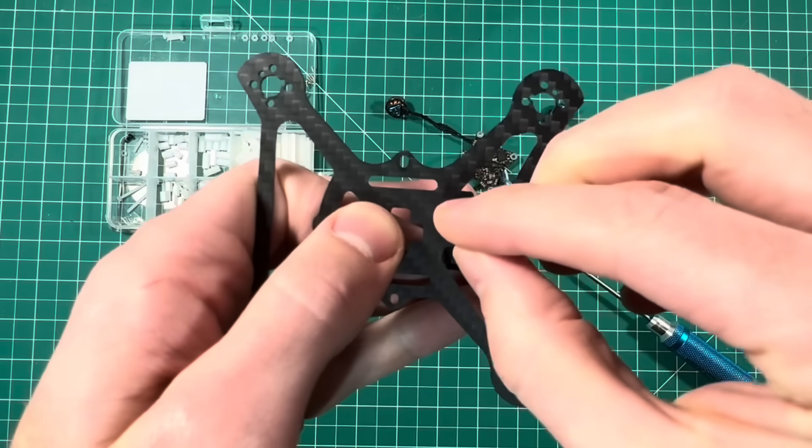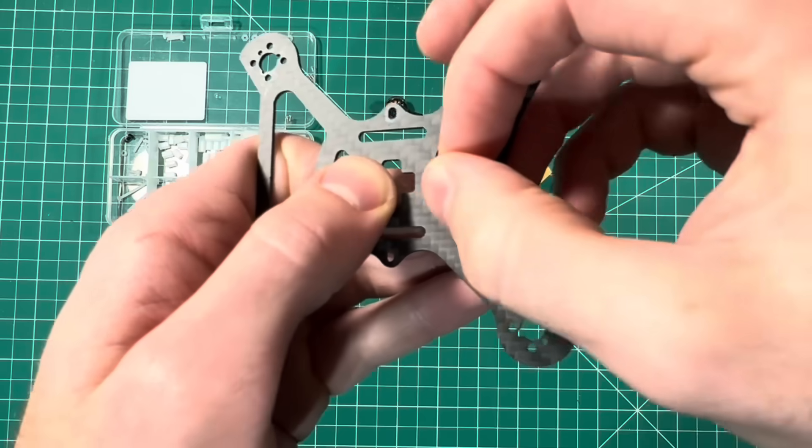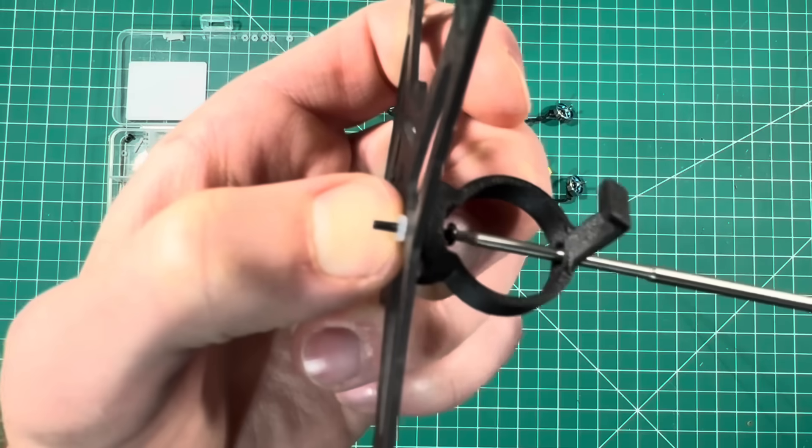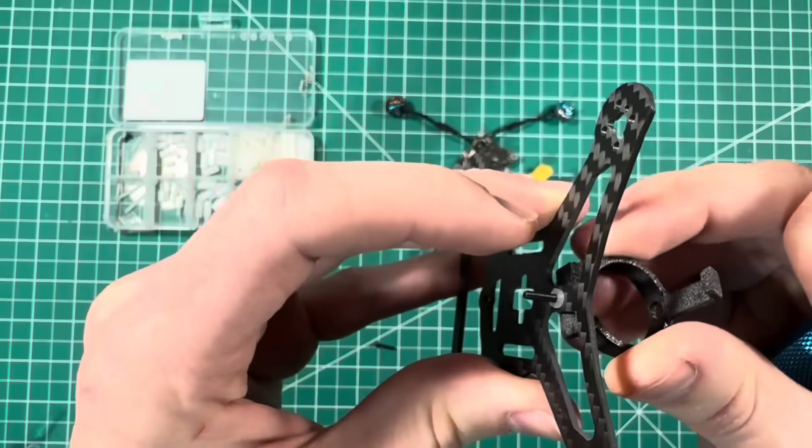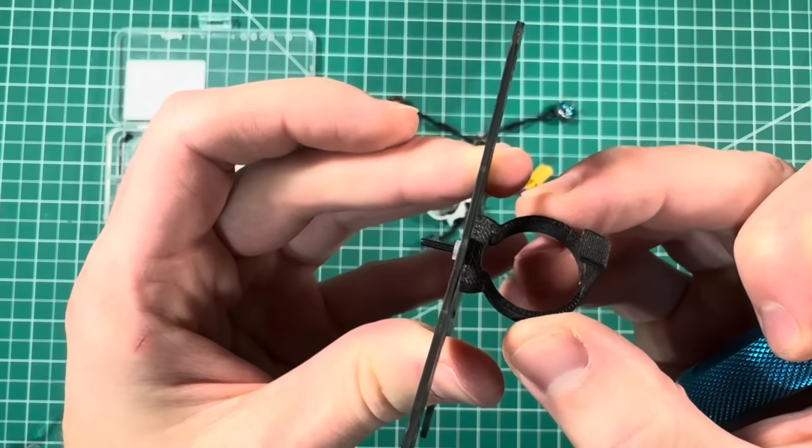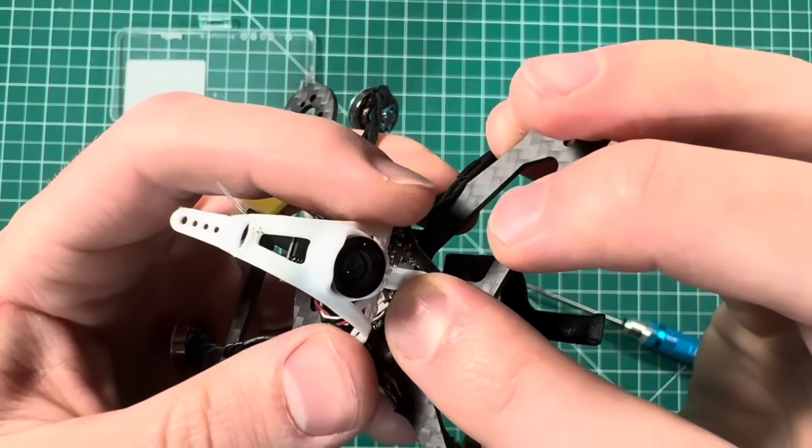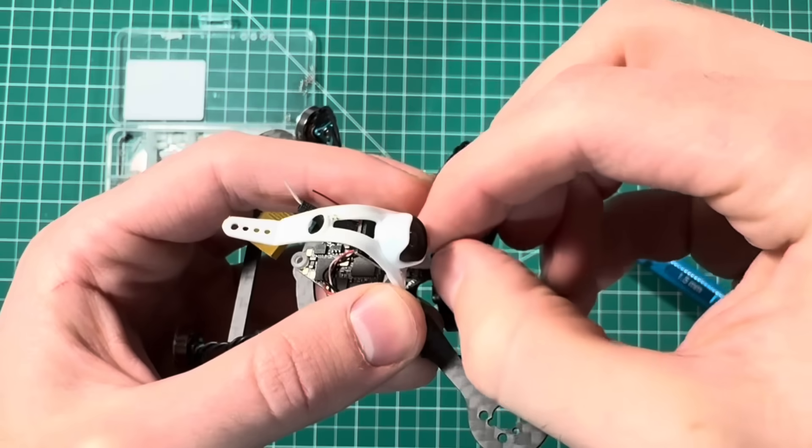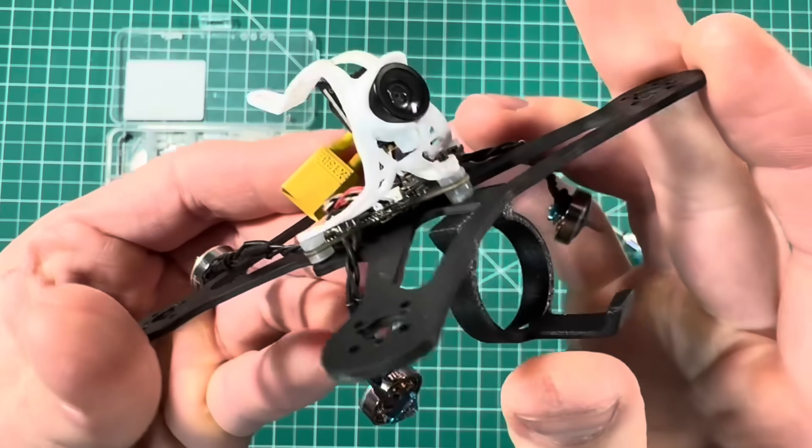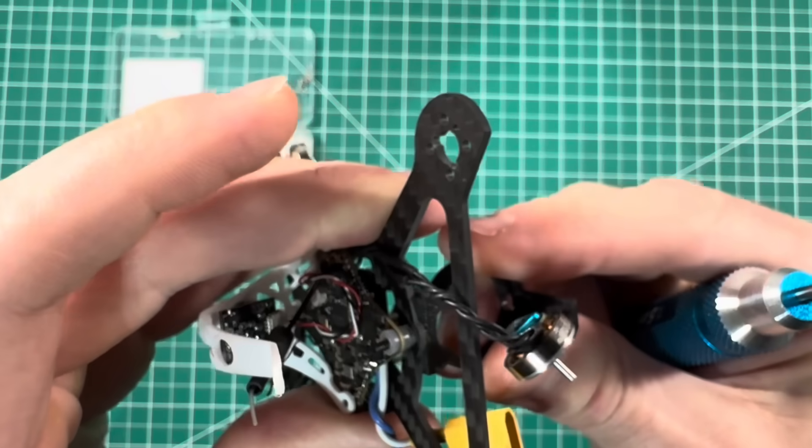Now secure it with the nut. Make sure the holder is tight, we don't want it wobbling around. Slide the flight controller and canopy on top and secure it with another nut.